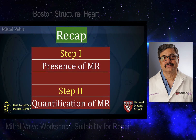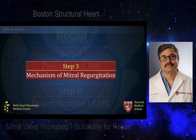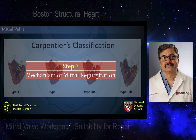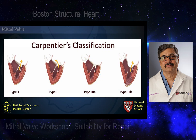Step two is to quantify mitral regurgitation. Step three is to identify the mechanism of MR. We follow the Carpentier classification: Type 1, normal leaflet function; Type 2, excessive motion; and Type 3A and 3B, restricted motion — either because of ischemia or rheumatic restriction of the leaflets.